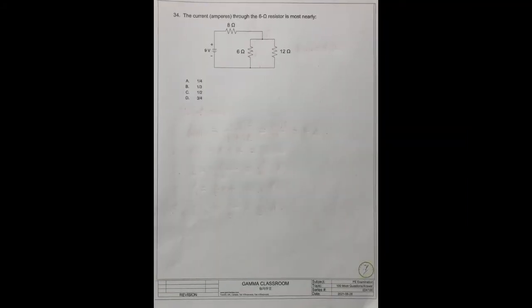Question 34. The current amplitude through the 6 ohm resistor is most nearly what number? The 4 answers.